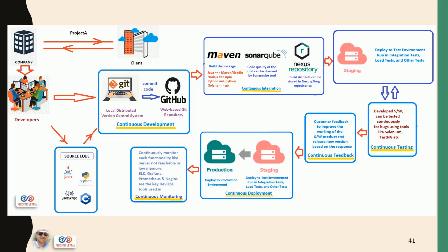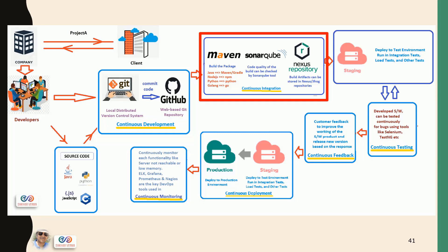Once they feel they have written the code for this project, they will push or commit the code into GitHub. The code finally moves into the GitHub repository — this is what happens in continuous development. Next is continuous integration. Now we have the code available in GitHub. The next step is to build the package. The developers have written the code in Java, and for Java the build tool is Maven.